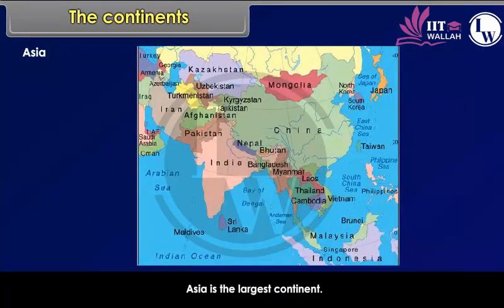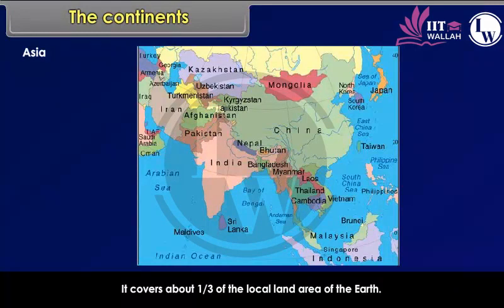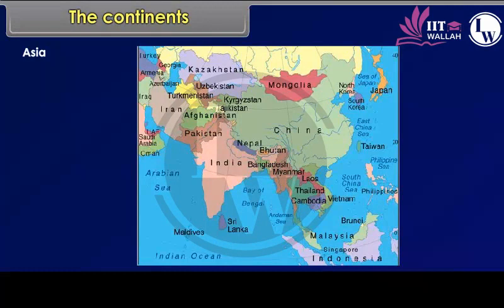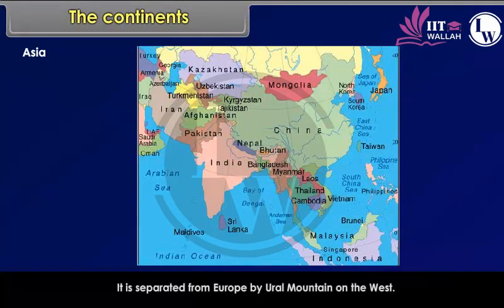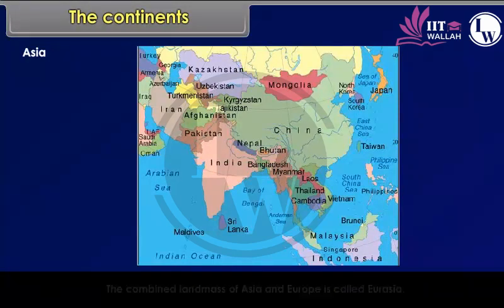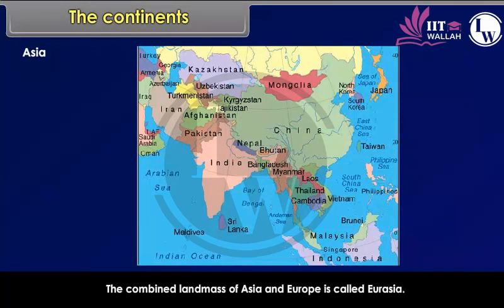Asia is the largest continent. It covers about one-third of the total land area of the Earth. Asia lies in the Eastern Hemisphere. It is separated from Europe by the Ural Mountains on the west. The combined land mass of Asia and Europe is called Eurasia.